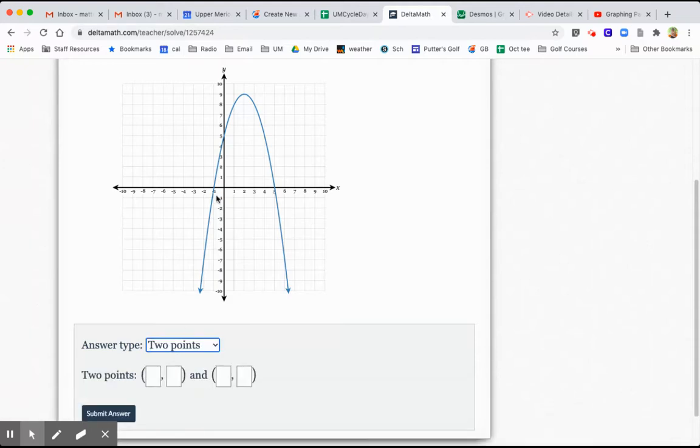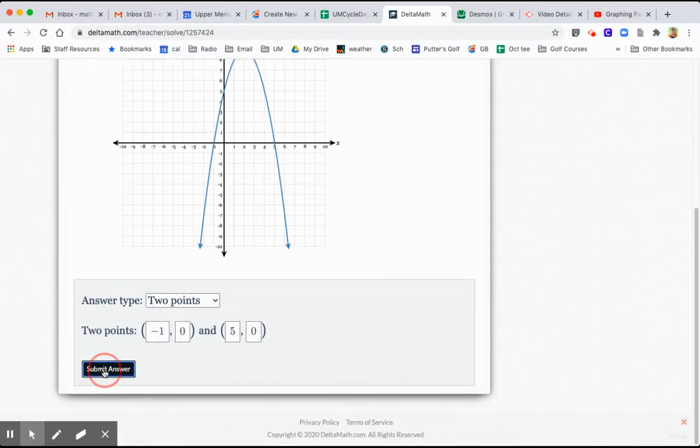And they want the ordered pairs, of course. On the left here, that's negative 1, 0. So I type that in. And the root on the right is 5, 0. So I type that in. I submit my answer.